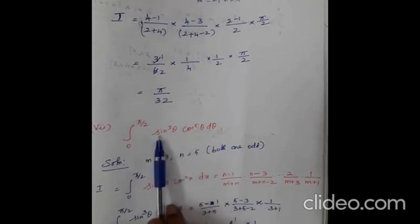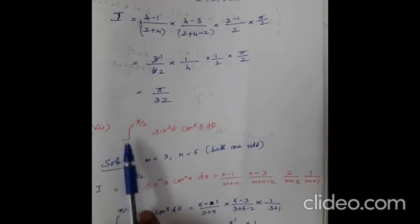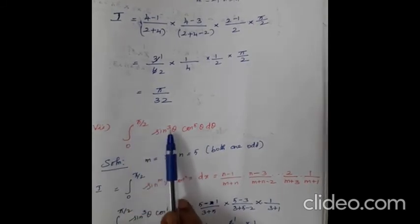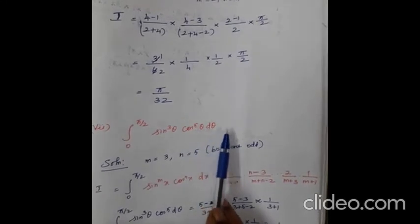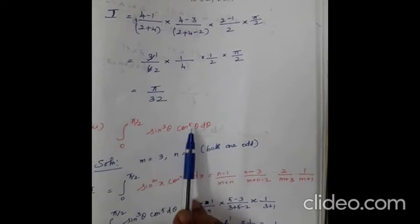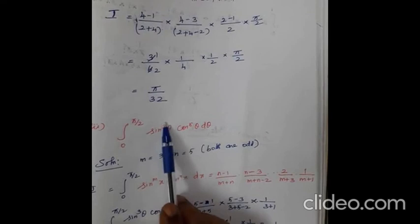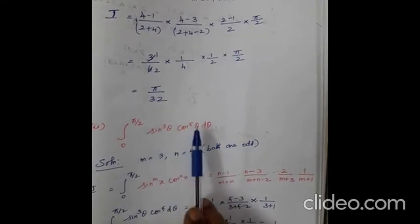See the seventh sum. Here also we have both sine and cosine — two variables. The seventh subdivision: integral from 0 to π/2 of sin³(θ) · cos⁵(θ) dθ. In the last sum, both powers were even. Here both m = 3 (sine power) and n = 5 (cosine power) are odd numbers.